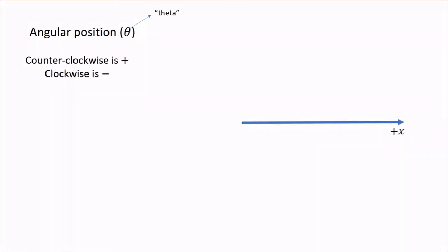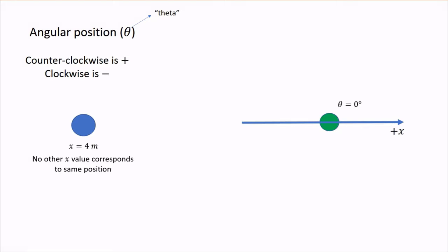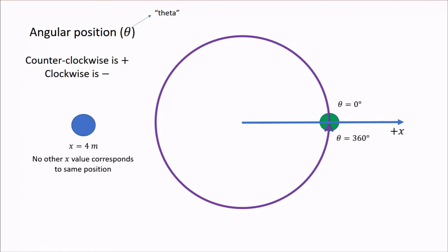We call this an angular position because it tells us where the object is on the circle of the rotation. This is similar to how a regular position tells us where in space the object is. But there is an important difference between the two. With regular position, each position value was unique. If I say something is at x equals 4 meters, there is no other x position that corresponds to the same location in space. With angular position, that is not true. Zero degrees corresponds to something over here, but 360 degrees also corresponds to having gone around the full circle and ending up back at the same place. So both zero degrees and 360 degrees correspond to the same angular position.